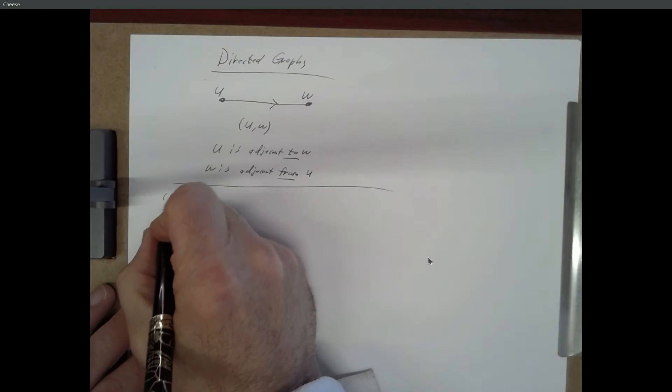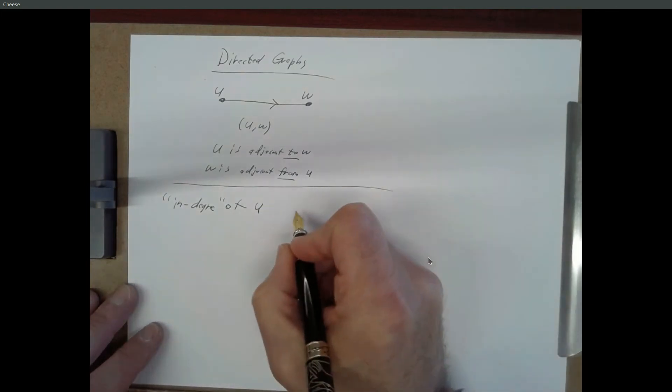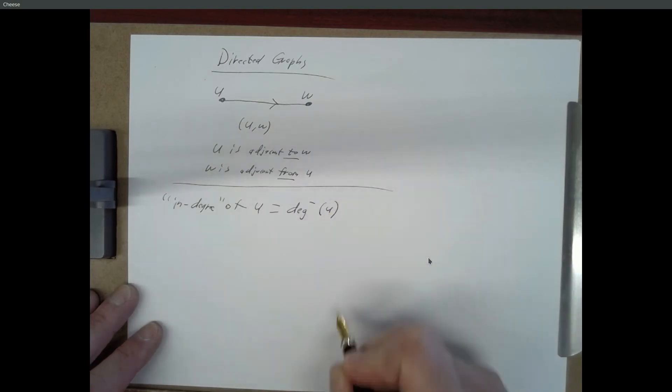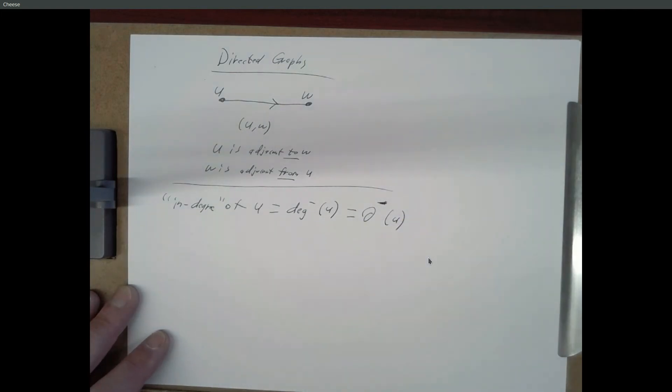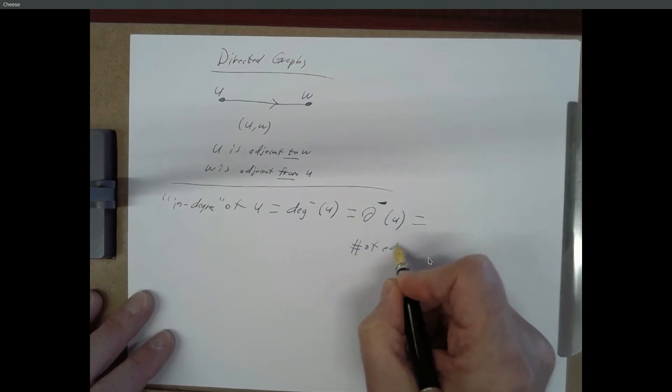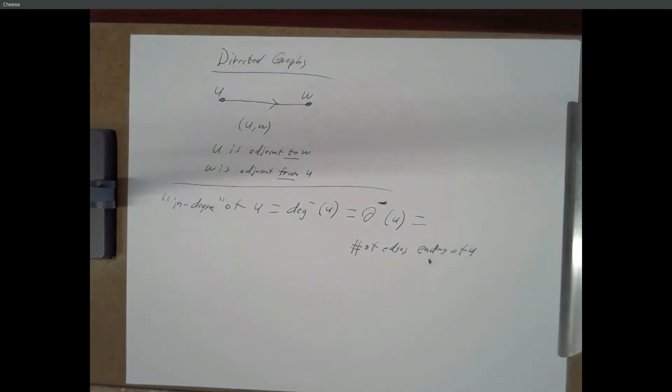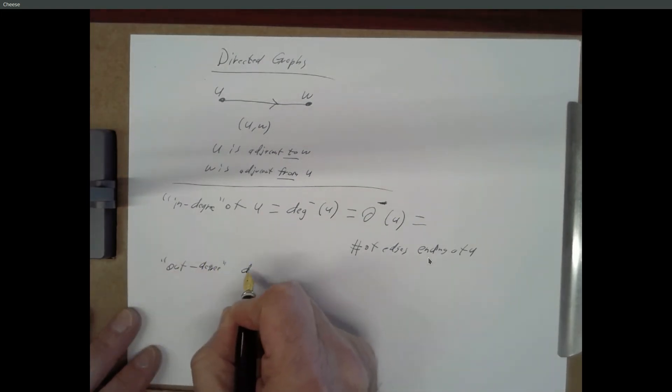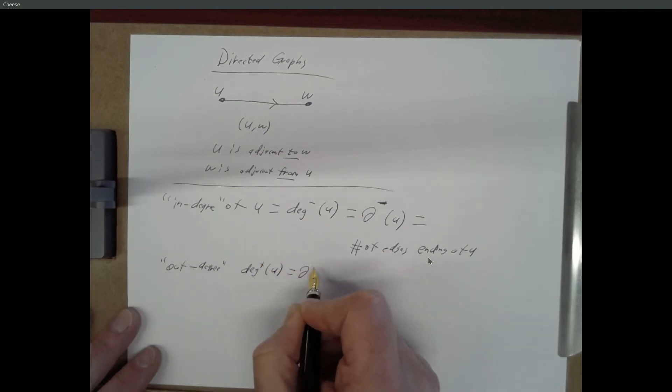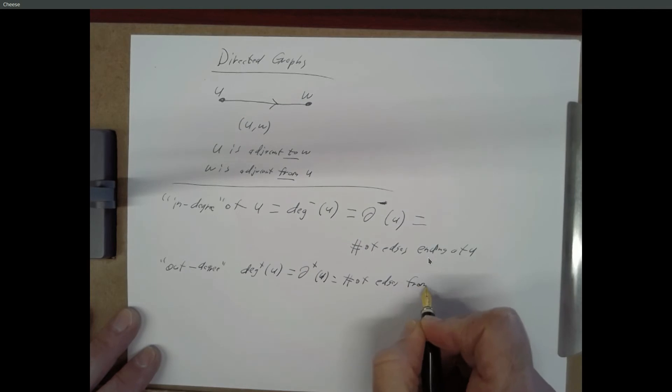Okay, so we can describe the indegree of U, which we can write as degree with a little minus sign of U. Or we can write as a delta with a minus sign of U. And this equals the number of edges which end at U. So the number of edges whose terminal vertex is U. And the out degree, which is degree plus of U, or delta plus of U, equals number of edges from U.